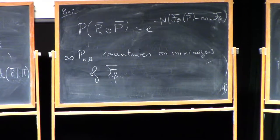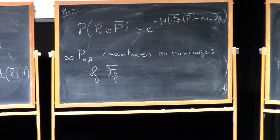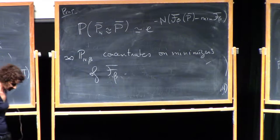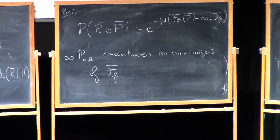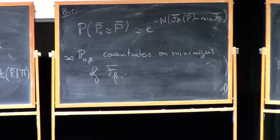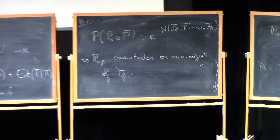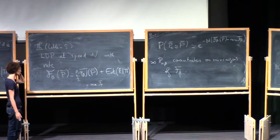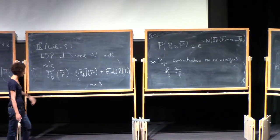What are minimizers of F_beta? We expect them to be those limiting point processes that we don't really have a handle on. A corollary of this result is, in the cases where we know the limiting point process — like sine beta or the GinOE ensemble — we obtain that sine beta minimizes this functional. The analog of this functional, not averaged. And the same for the GinOE point process.